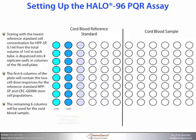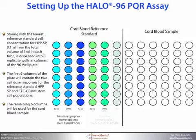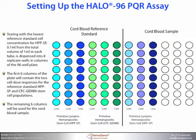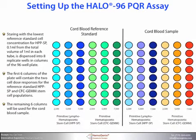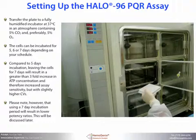Starting with the lowest reference standard cell concentration for HPP-SP, 0.1 milliliters from the total volume of 1 milliliter in each tube is dispensed into eight replicate wells in columns of the 96-well plate. The first six columns of the plate will contain the two cell dose responses for the reference standard stem cell populations. The remaining six columns will be used for the core blood sample. Transfer the plate to a fully humidified incubator at 37°C in an atmosphere containing 5% carbon dioxide and, preferably, 5% oxygen.